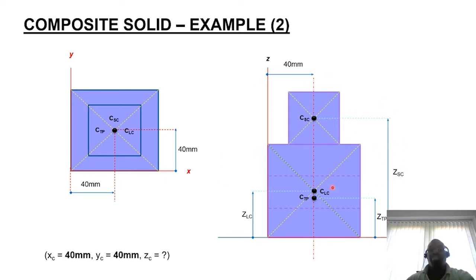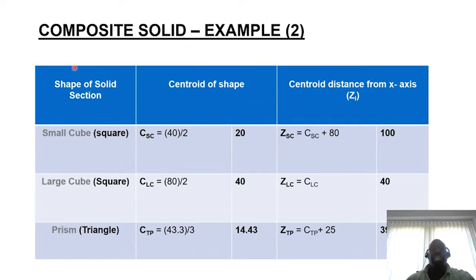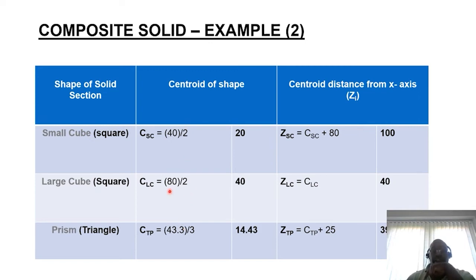Using these diagrams makes it easy to identify where centroid positions are likely to be. A simple table is set up with three columns representing the segmented solid forms — small cube, large cube, and triangular prism — along with their individual centroid positions. Using bisectors from corners and provided dimensions, the z-values are: 20, 40, and 14.43mm respectively.